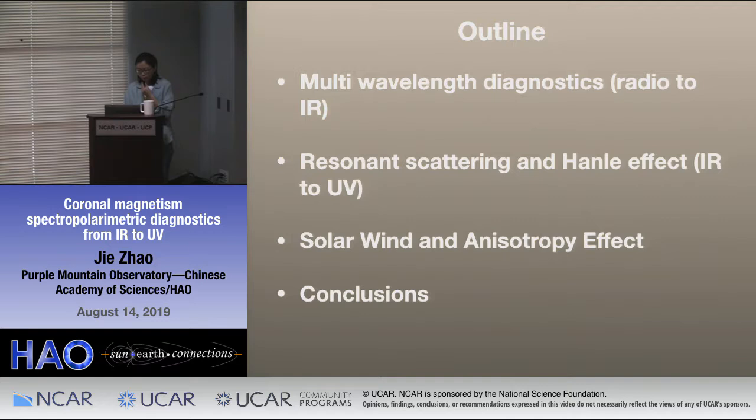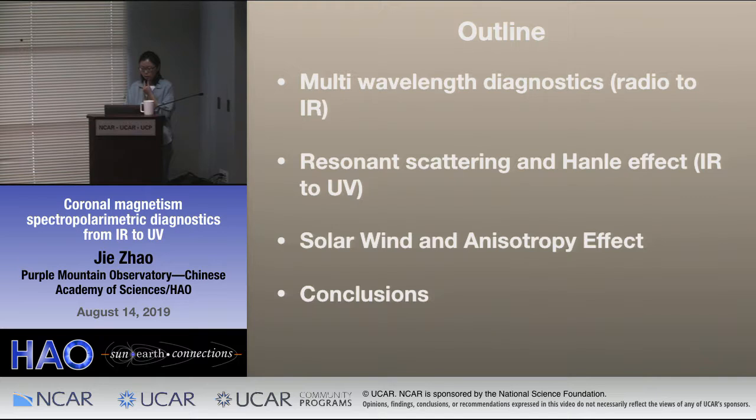This is the outline of my talk. First I will introduce the multi-wavelength diagnostics from radio to infrared wavelengths to measure the coronal magnetic field. Then I will show the resonant scattering and Hanle effect in infrared and ultraviolet wavelengths. I will also show some forward modeling results on the solar wind and its anisotropic effect, and at last I will give my conclusions.